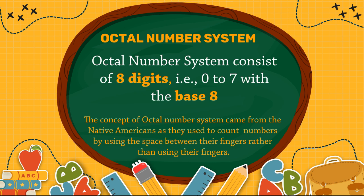The third one is octal number system. The octal number system consists of 8 digits from 0 to 7, with the base 8. The concept of octal number system came from the native Americans as they used to count numbers by using the spaces between their fingers rather than using their fingers. Therefore the base or radix is 8.